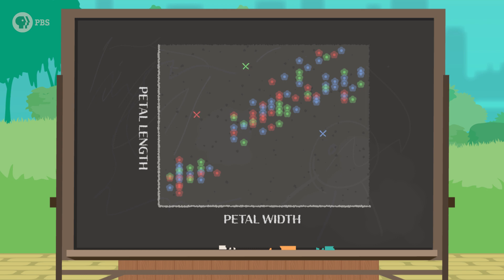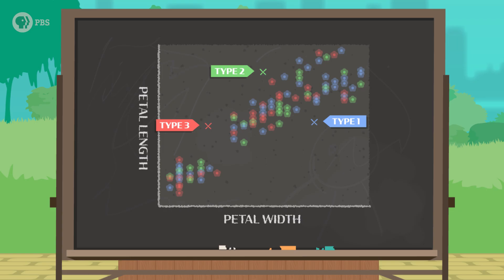Each data point, which is a flower, is given a label as type 1, type 2, or type 3, based on the algorithm's beliefs. Next, our model tries to correct itself — the average of each cluster of data points should be in the middle. So the model corrects itself by calculating new averages. We can see those averages marked with X's, which gives us an updated model of the three types of irises. But the graph is still pretty noisy. For example, it's a little weird that we have type 2 flowers so close to the average for type 3 flowers. But we did start with a random model, so we can't expect too much accuracy.